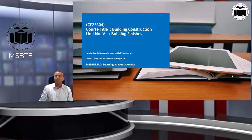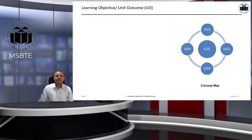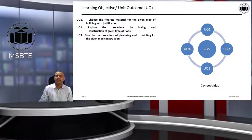Today we will study a very interesting module of building construction — that is building finishes. The course outcome of this topic is to select relevant material for finishing work. Learning outcomes include: first, choose the flooring material for the given type of building with justification; second, explain the procedure for laying and construction of a given type of floor; third, describe the procedure of plastering and pointing for the given type of construction; and fourth, select the relevant type of paint material for a given type of building surface.